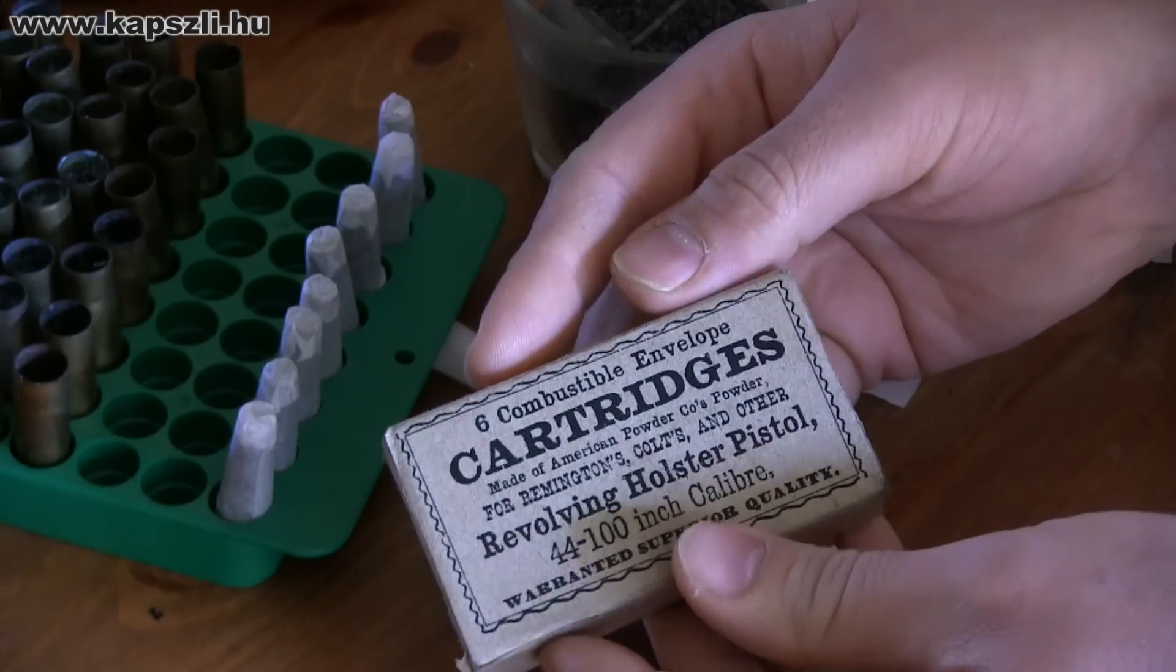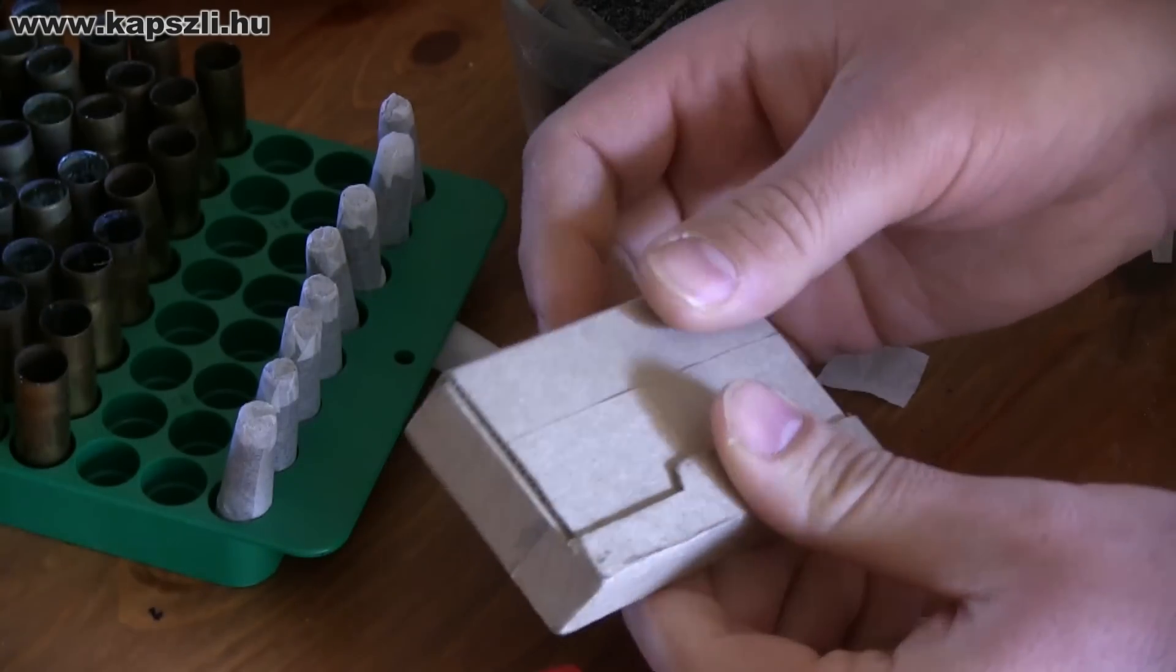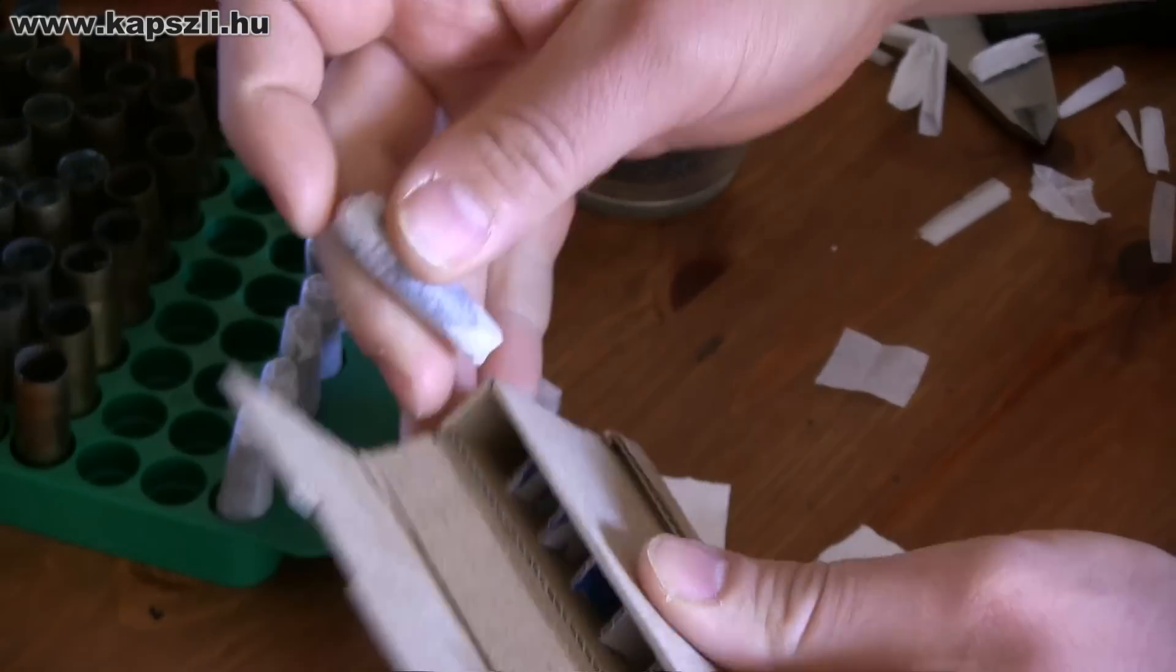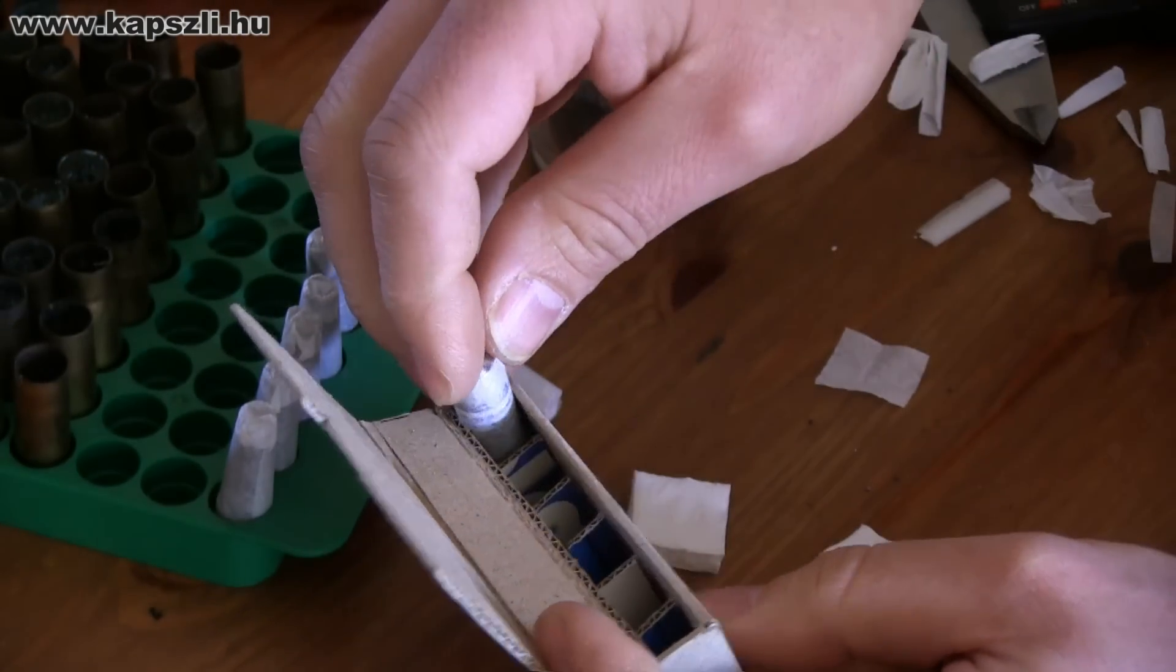The cartridges were boxed in wooden containers wrapped in paper. Usually 6 cartridges were packaged together with 7 caps. The boxes were disposable, but I made my own version for longer use.